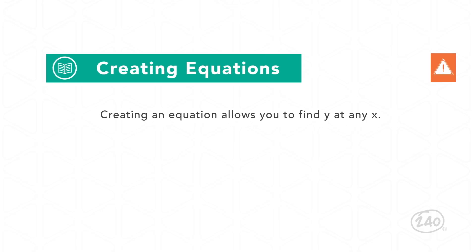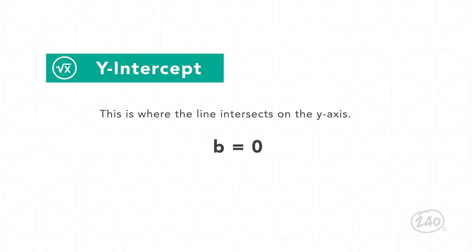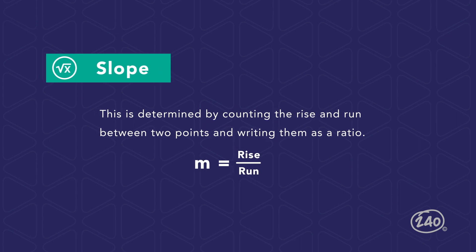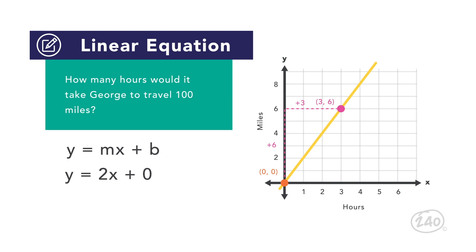Creating an equation allows you to find y at any x. Since the graph makes a straight line, you can write a linear equation in the form y equals mx plus b, where m is the slope and b is the y-intercept. The line intersects the y-axis at the origin (0,0), so b equals 0. Determine the slope m by counting the rise and run between two points as a ratio of rise over run. The two ordered pairs (0,0) and (3,6) are shown on the line. The rise between them is 6 and the run is 3, so m equals 6 over 3, which equals 2. Since m equals 2 and b equals 0, the equation is y equals 2x.